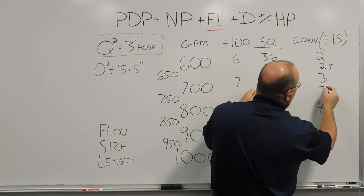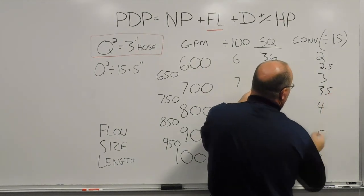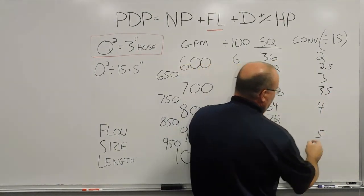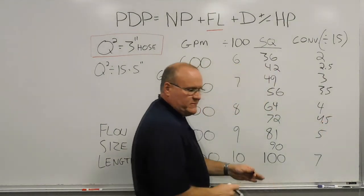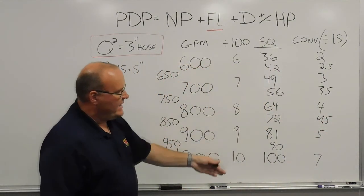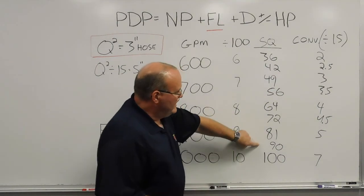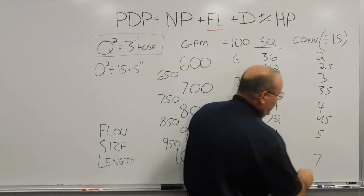56 is going to be about 3.5, not quite 4. 72, you're going to end up with about 4.5 or so. And again, this is 2 o'clock in the morning, easy math, you find the number that works. And then for 90, it's going to be the one that falls right in at 6.